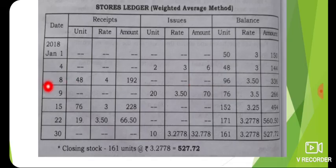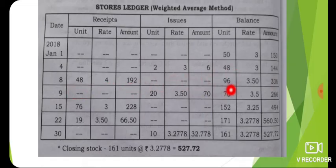Balance: 48, 48. Received 4 at 48, giving 4 — total 182. Then 48, 99.